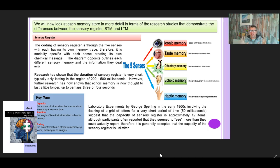Well, the five senses known as modalities in the specification are broken down into iconic memory which deals with visual information, taste memory which deals with taste information, olfactory memory which deals with smell and sensations, echoic memory which deals with auditory sound information, and haptic memory which deals with tactile and touch information.